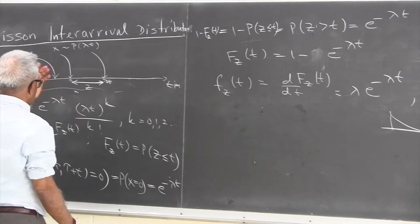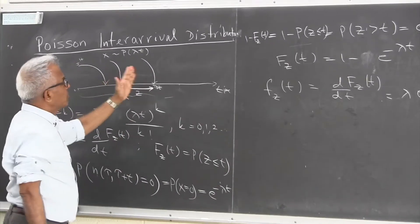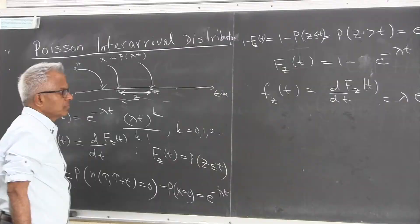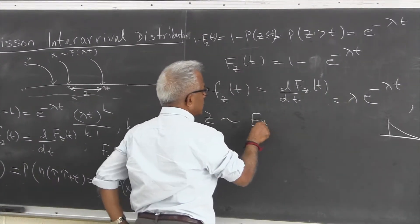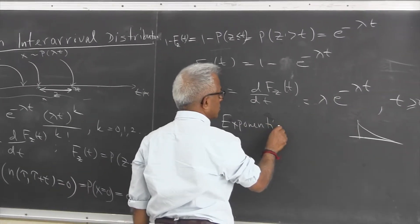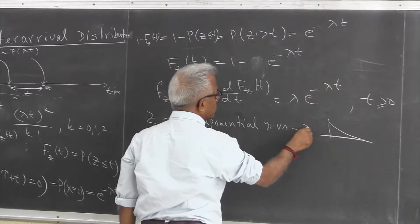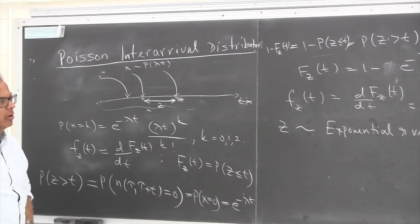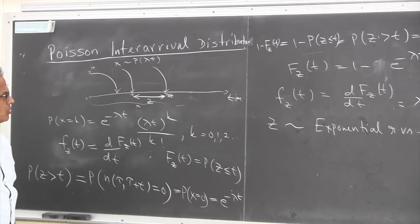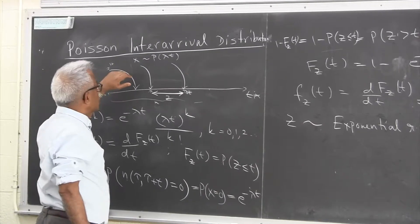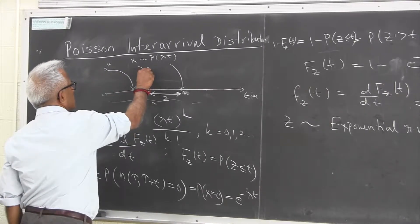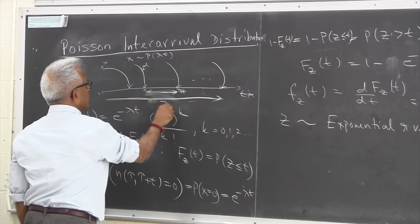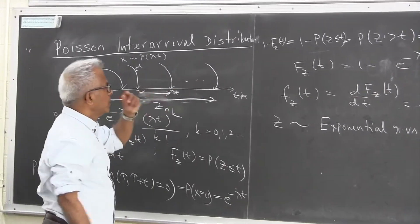So we come to the conclusion that the inter-arrival durations are exponential random variables with parameter lambda, where lambda comes from the underlying Poisson arrival. Now we can generalize this quickly to the distribution of the nth arrival. If you start tagging arrivals as 1st, 2nd, 3rd, etc., and denote this duration by the random variable z_n, that's the time from the start to the nth arrival.